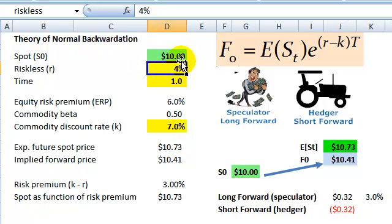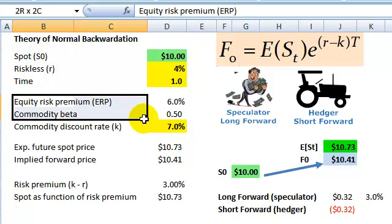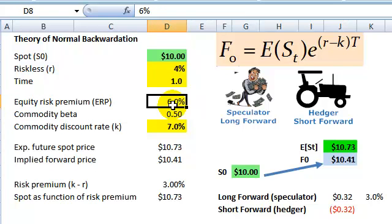Spot price of $10, I'm going to assume a riskless rate of 4% one period time, so we don't have to deal with that dimension. And then I'm going to apply the capital asset pricing model to the commodity, keep it real simple. Let's assume an equity risk premium, that's the excess return on the market of 6%. And then a commodity beta of 0.5. So all I mean by that is that this commodity has positive systemic risk or positive risk with the correlation.